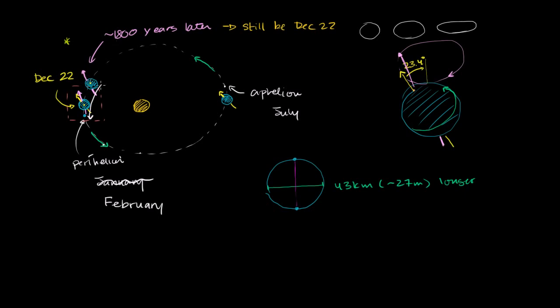1,800 years later, the date of the start of winter would be November 22nd. But that's not how we measure our calendar. Our calendar is actually measured from equinox to equinox. From December 22nd or 21st, there's slight fluctuations depending on the calendar.